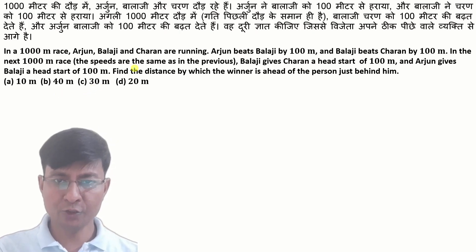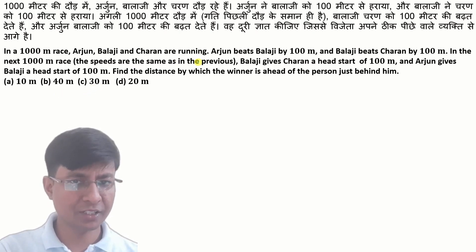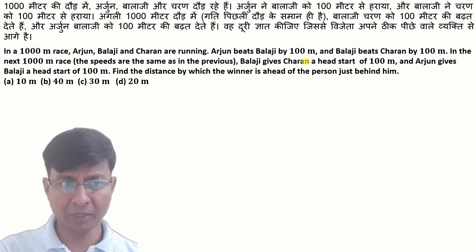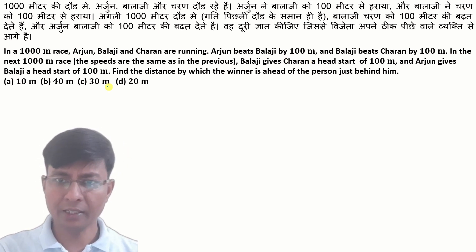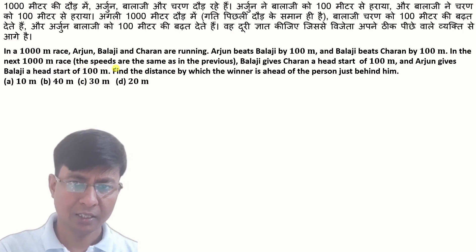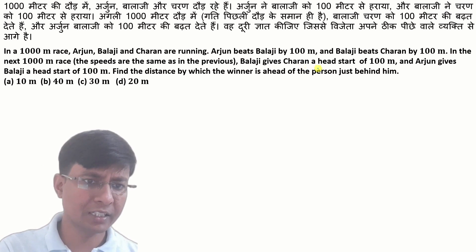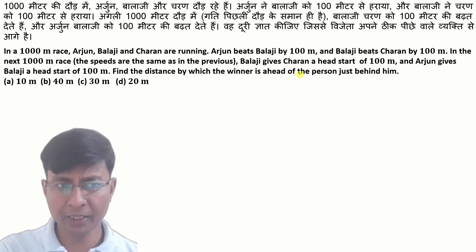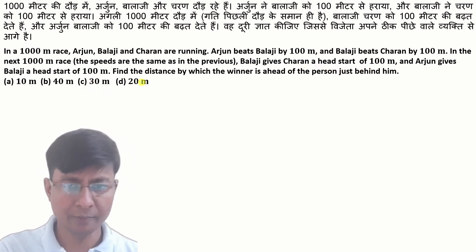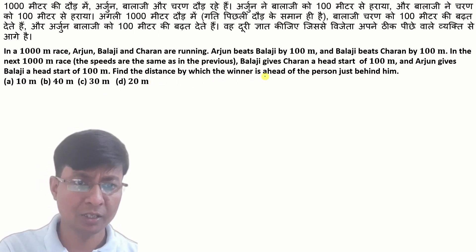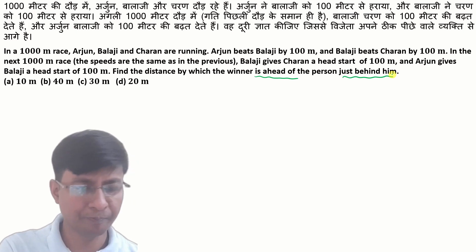In a 1000-meter race, Arjun, Balaji, and Charan are running. Arjun beats Balaji by 100 meters and Balaji beats Charan by 100 meters. In the next 1000-meter race, the speeds are the same as before. Balaji gives Charan a head start of 100 meters and Arjun gives Balaji a head start of 100 meters. Find the distance by which the winner is ahead of the person just behind him.